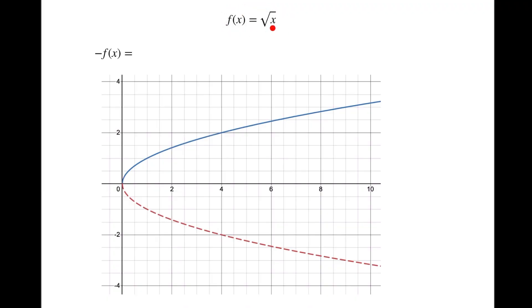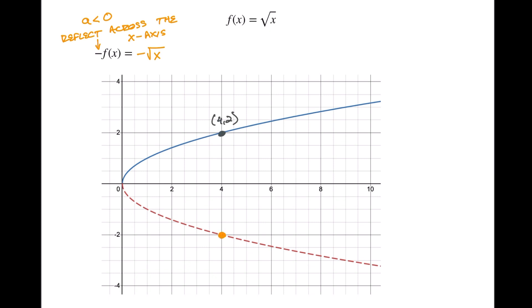Here's our next function: f of x equals the square root of x, shown as the blue graph. What's happening here is we're multiplying the whole function by a negative, giving us negative square root of x, and that reflects it across the x-axis. This is represented by the a value — if a is less than zero, we reflect across the x-axis. For example, the point four two gets mirrored to four negative two. So even though it flips across the x-axis, what we're actually doing is changing the y value.